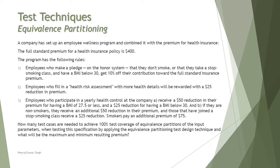We are taking a sample question to understand what equivalence partitioning looks like at the advanced level. A company has set up an employee wellness program combined with premiums for health insurance. The full standard premium for a health insurance policy is $400. The program has the following rules. Rule one: employees who make a pledge on the honor system that they don't smoke, or that they take a stop-smoking class, and have a BMI below 30, will get 10% off their contribution towards the full standard insurance premium.